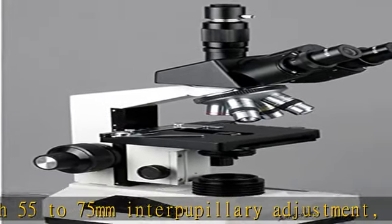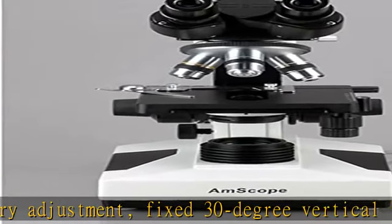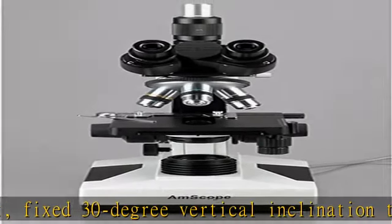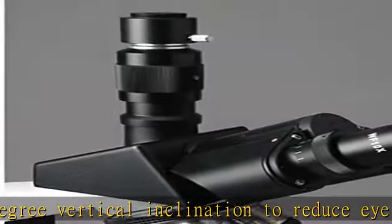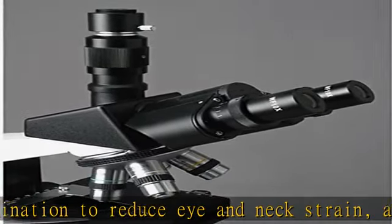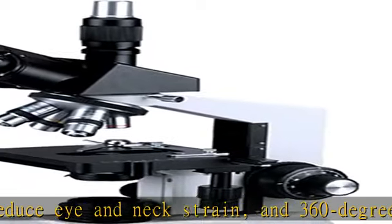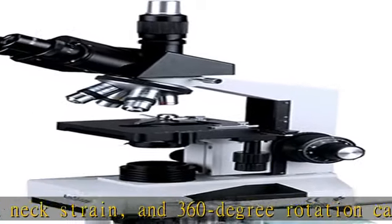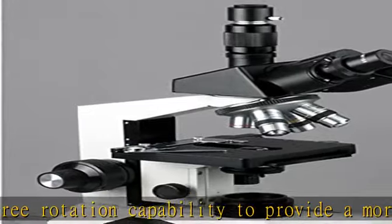Halogen illumination with rheostat to control light intensity, and 1.25 NA Abbe condenser with iris diaphragm and rack and pinion focus control for precise focus and clear examination. Double layer mechanical stage with 1mm stage divisions and stage stop, graduated coarse and fine focus with tension control to prevent stage drift.